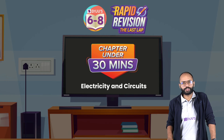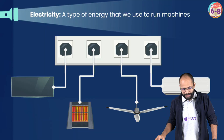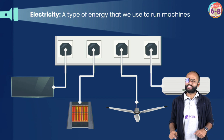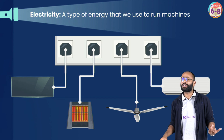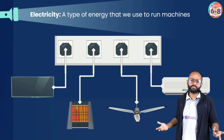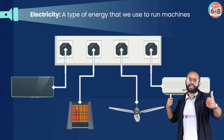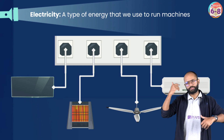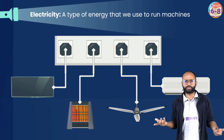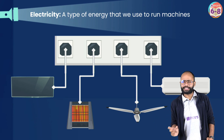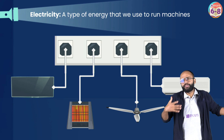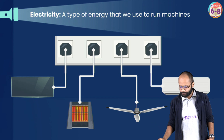Let's start from electricity. Electricity is a type of energy which we use to run machines — like heater, fan, mobile phone, TV. Nowadays everything uses electricity. It's a form of energy which can be converted to many different forms, and that's how we make use of it.